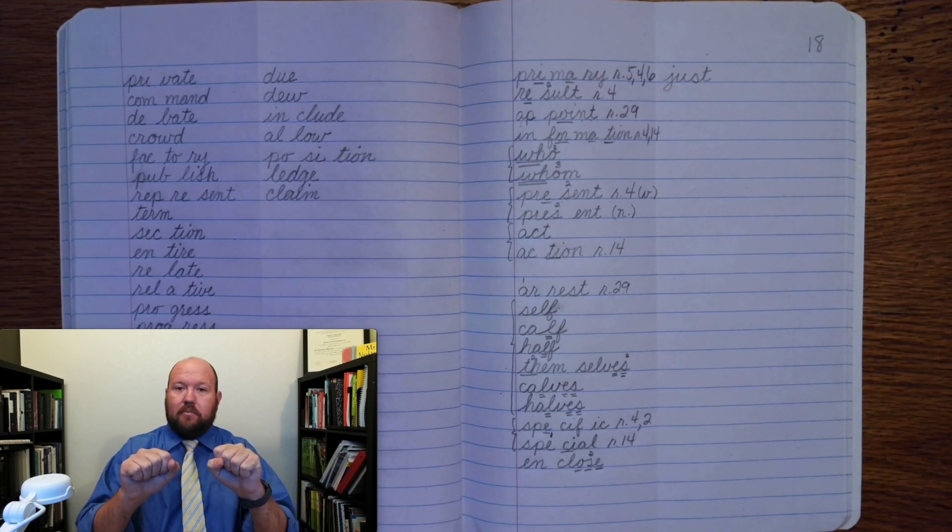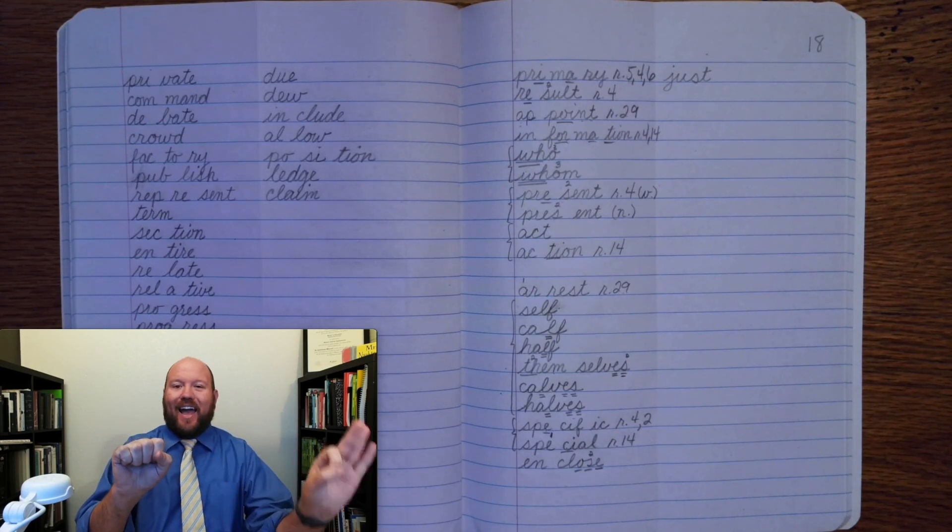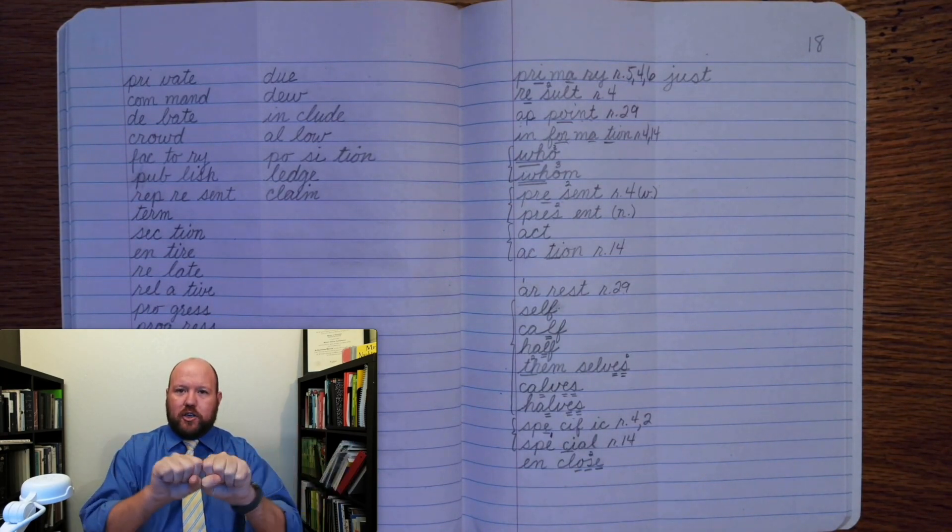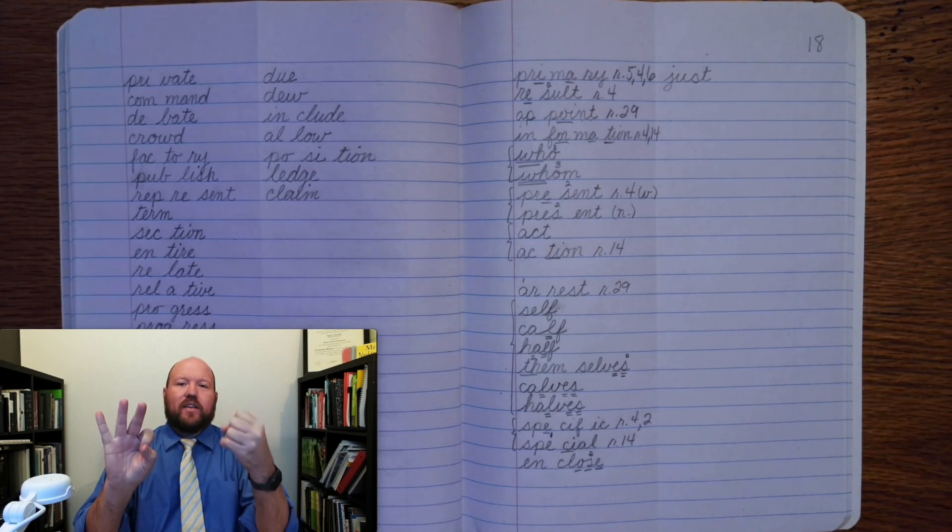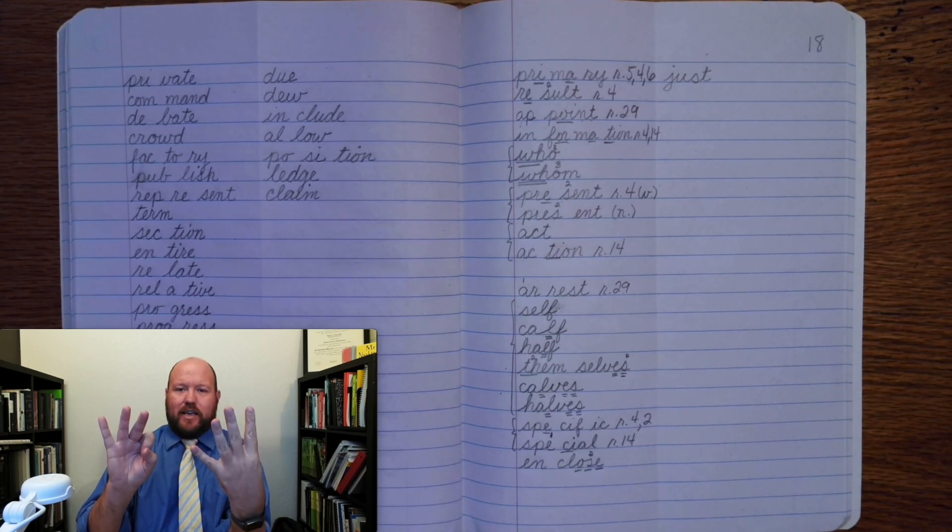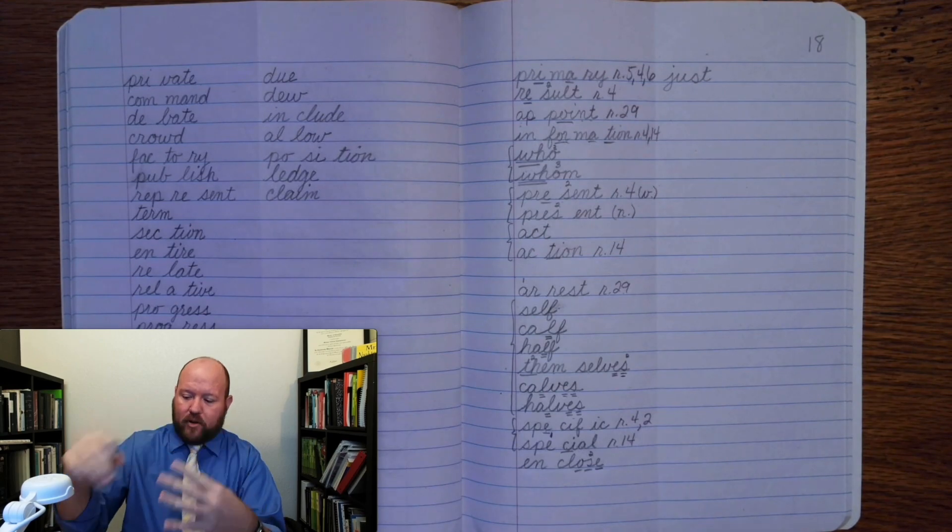Justice happens when the just decision is made. Justice. Base word, just. Ending is. I write just, add is to make the word justice. Just-tis. J-U-S-T-I-C-E. Here I'm going to use a C to make that S sound. Justice.